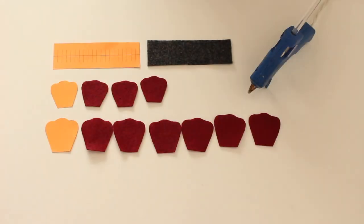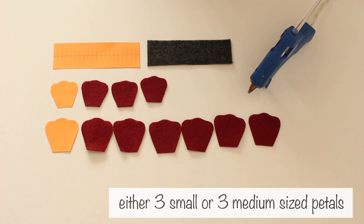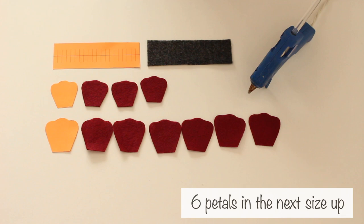For the anemone in the color ruby, I used the long strip template to cut felt for the center, either 3 small or 3 medium sized petals, and 6 petals in the next size up.